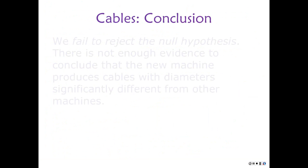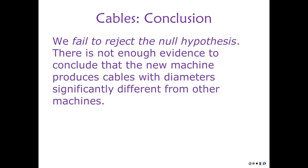The conclusion: we fail to reject the null hypothesis. There's not enough evidence to conclude that the new machine produces cables with any different diameter. We could change the criteria and redo it, but we have to live with the alpha of 0.01 we set up. Fail to reject the null hypothesis — P was greater than alpha.